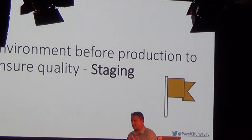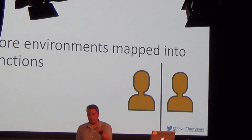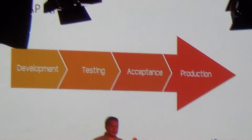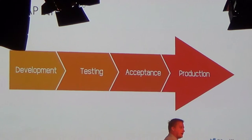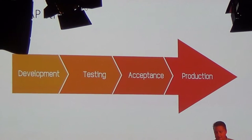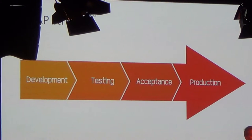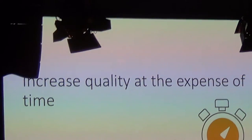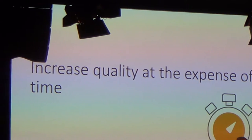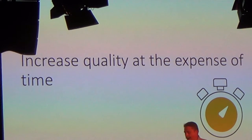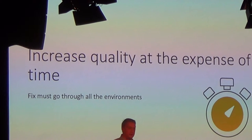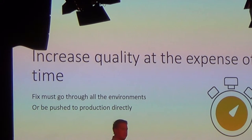The idea was so great and people liked it, so they decided to put more of those environments and map them into roles. This is where the idea of DTAP appeared: it starts with development environment, then moves to testing, then to acceptance, and finally to production. What this really is, is increasing quality at the expense of time. And it takes a lot of time to go through the DTAP street. It goes even more complex because if you need to produce a fix, it needs to go through the same pipeline, which takes a lot of time — or you deploy directly to production, and then we're back to square one.